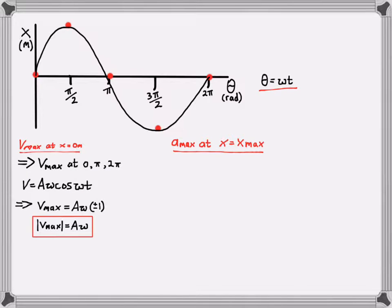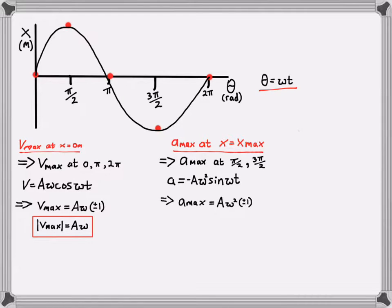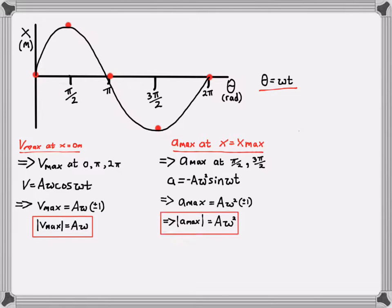Maximum acceleration occurs where displacement is at a maximum — at pi over 2 and 3 pi over 2 radians. Substituting those values into our acceleration formula, sine of omega t reduces to plus or minus one. We're interested in the magnitude, so the magnitude of the maximum acceleration equals A omega squared. This is for the scenario where displacement starts at zero.